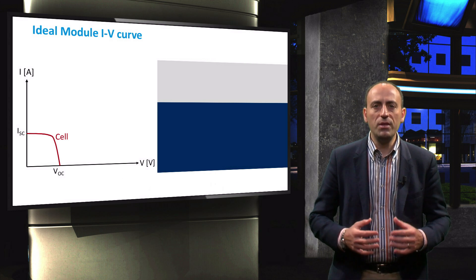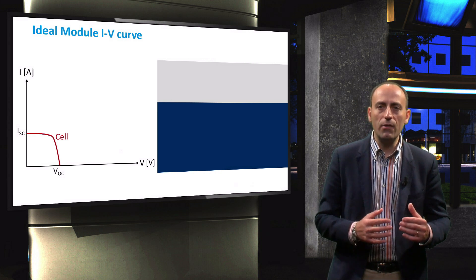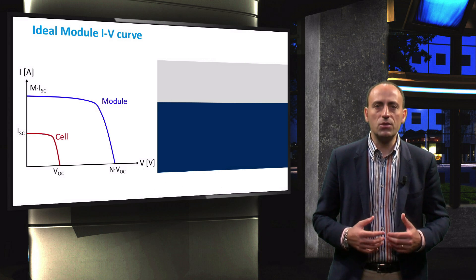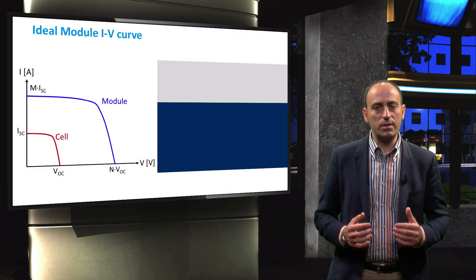All cells will therefore be operating at exactly the same current and voltage. Consequently, the IV curve of the PV module has the same shape as that of a single cell.